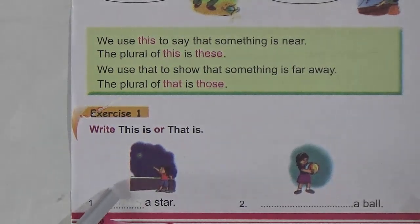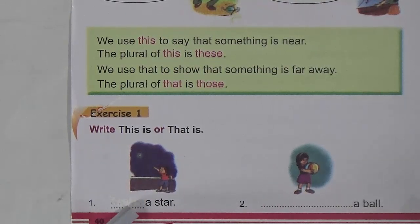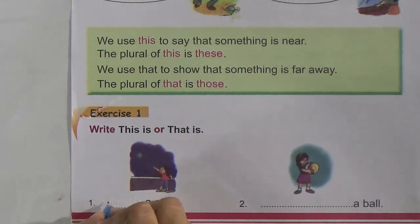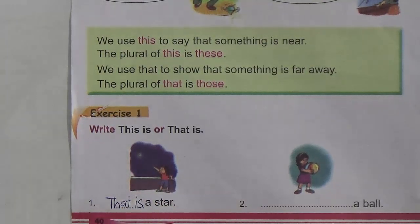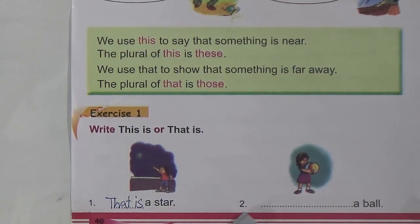Now look at the first picture: blank — a star. There is only one star and it is not near the boy, so the star is far away. We will write here 'that is'. Now look at the second picture: the ball is near the girl, and number two is blank — a ball. So we will write here 'this is'.